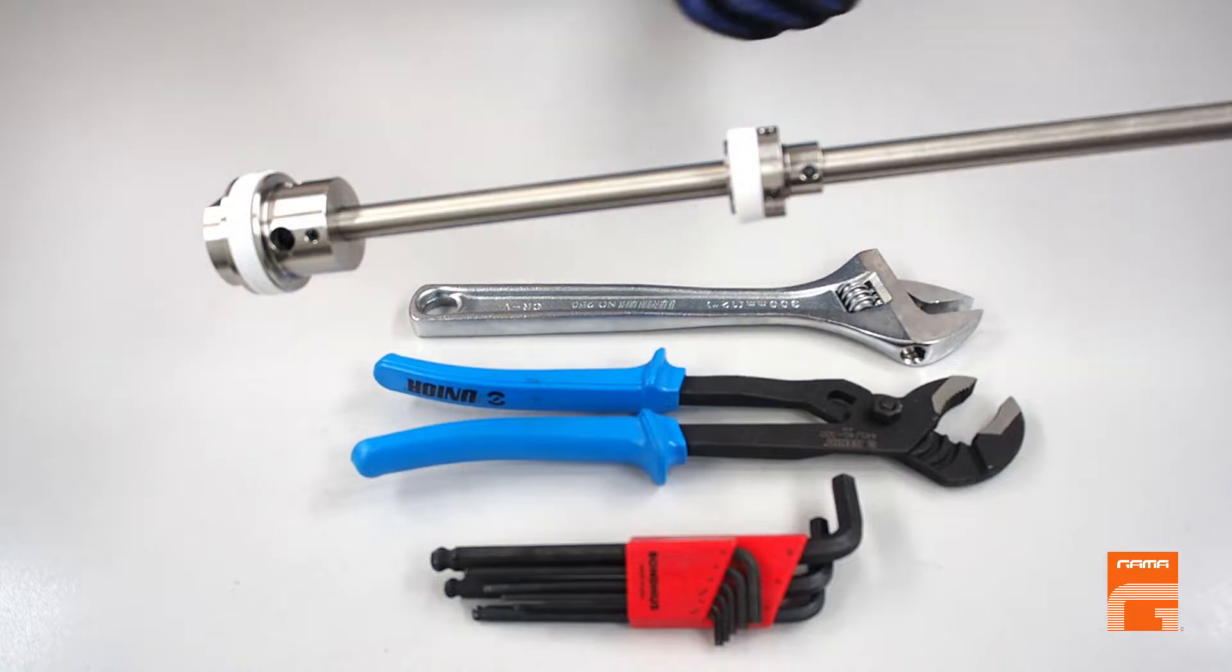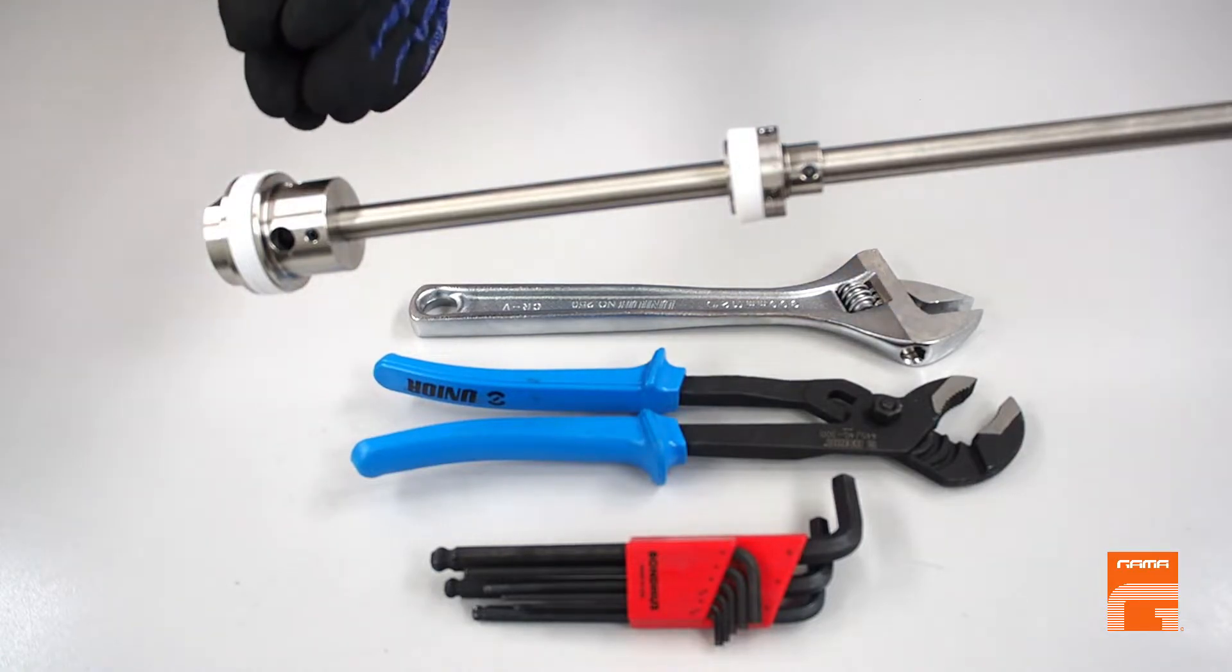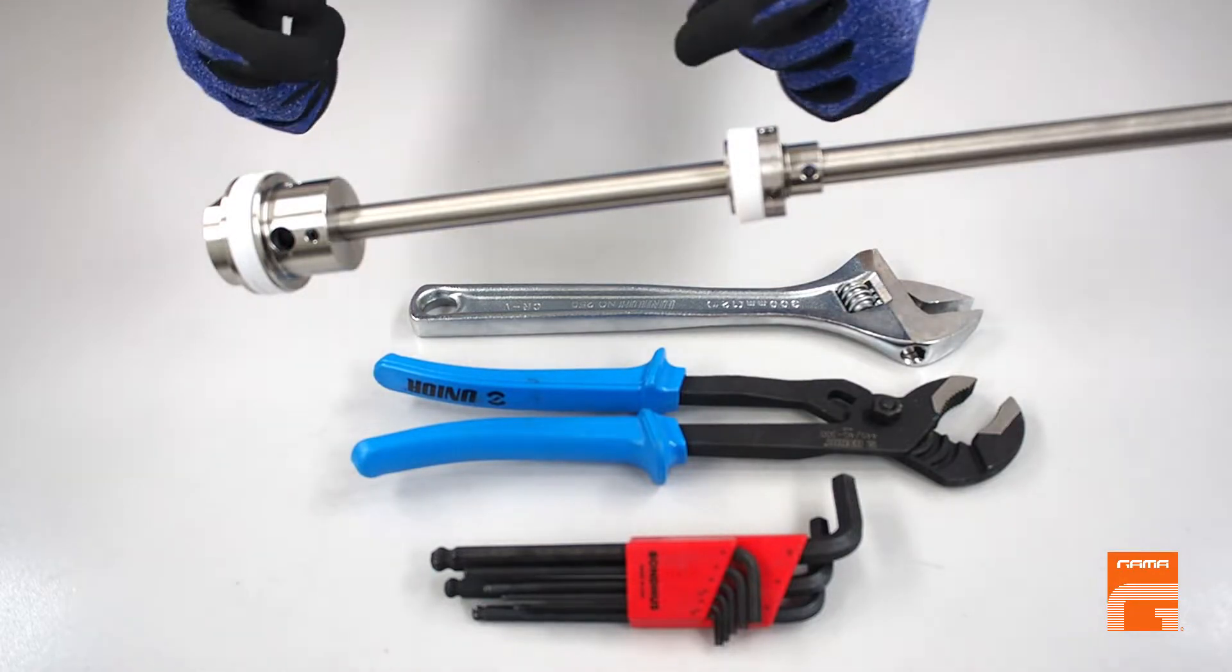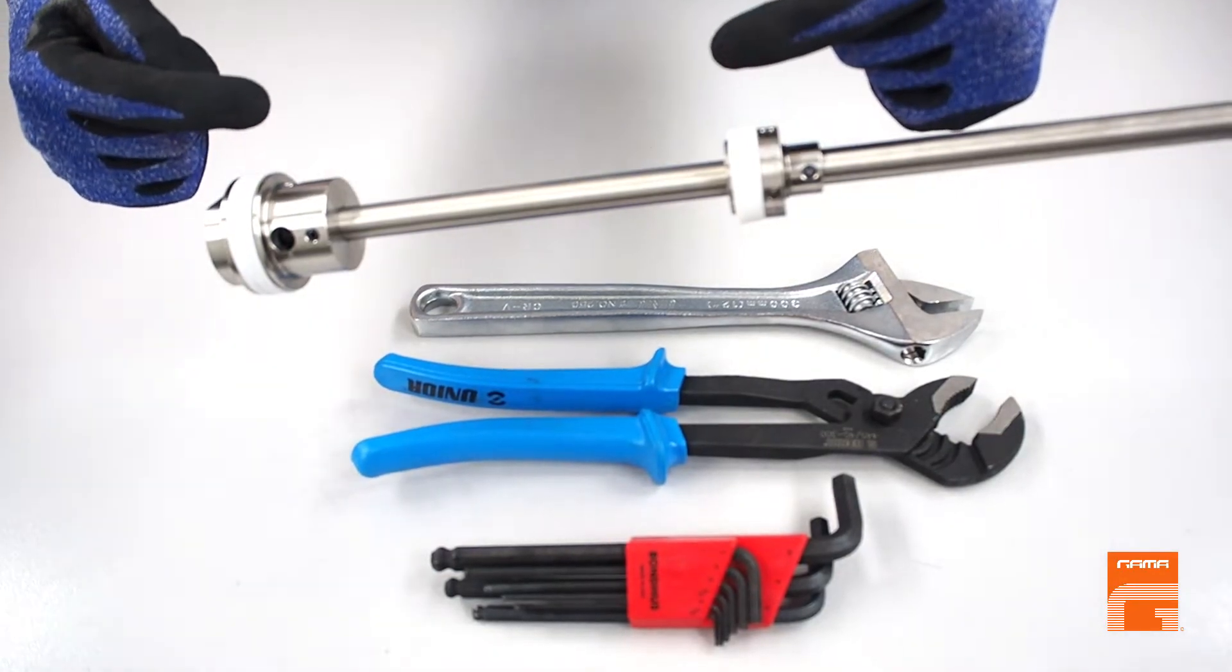As you can see, the rod has two seals: the bigger one at the bottom and the smaller one above. When servicing the pump, both of them should be replaced.